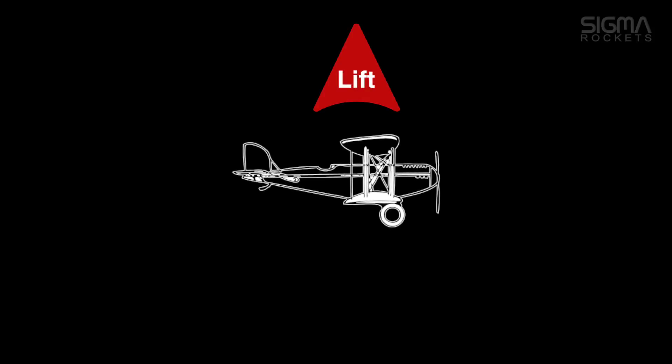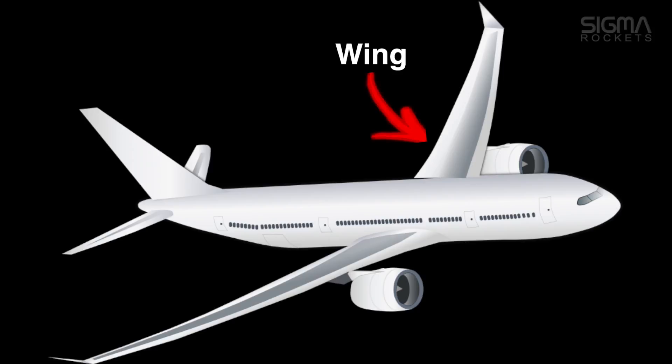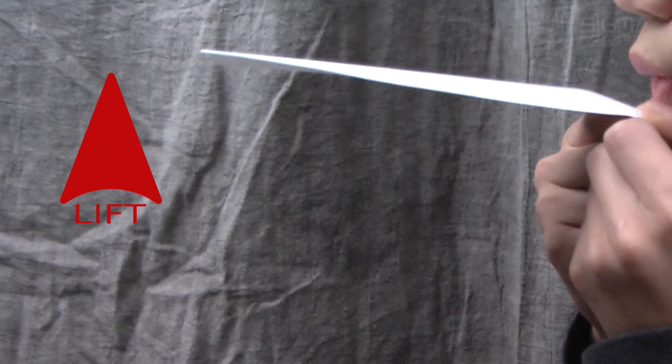Lift is the force that counters the weight of the plane. This is done using the wings on a plane. As we demonstrated in a previous video, an object will move towards lower air pressure. As air moves, lower pressure is created.